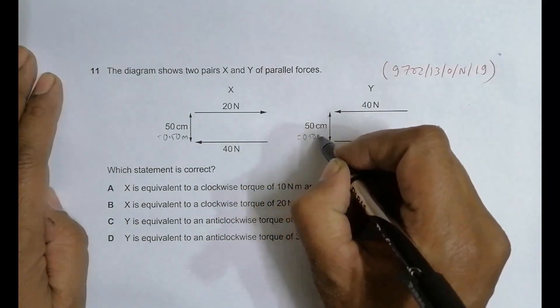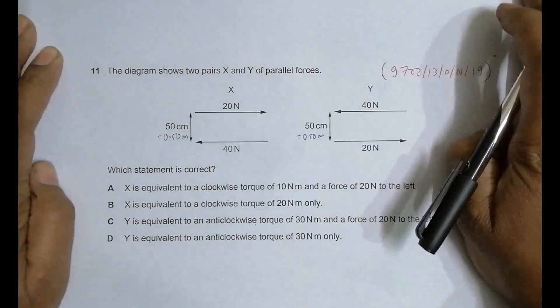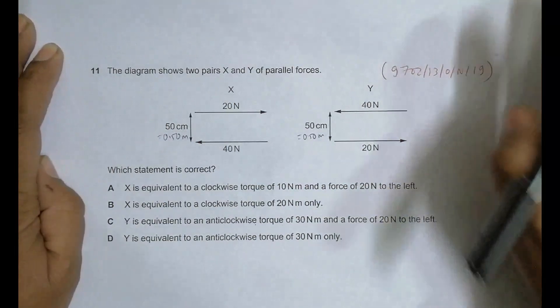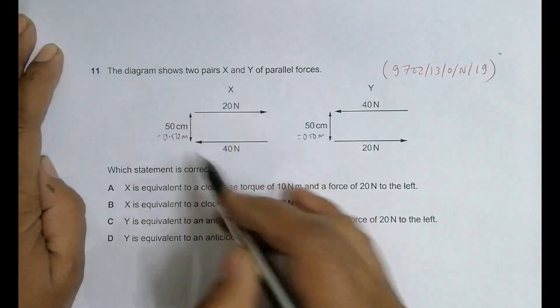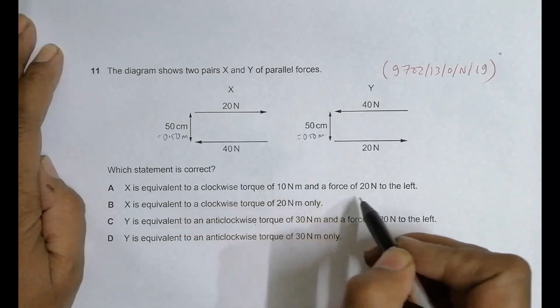Now we have to identify which statement among these is correct. The first option says that X is equivalent to a clockwise torque of 10 Newton-meters and a force of 20 Newtons to the left.